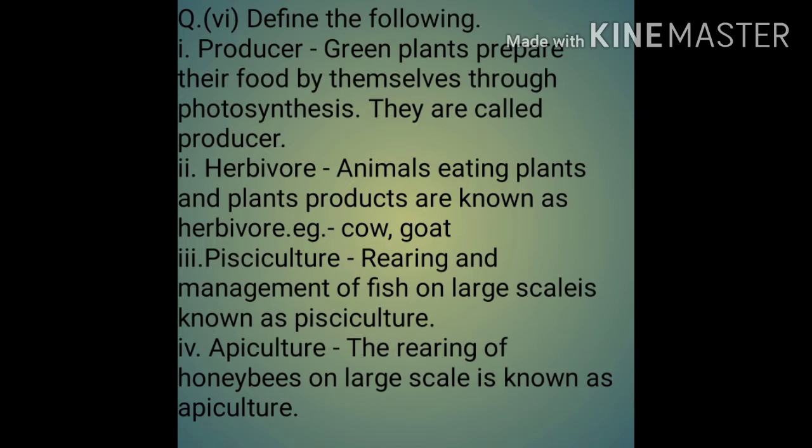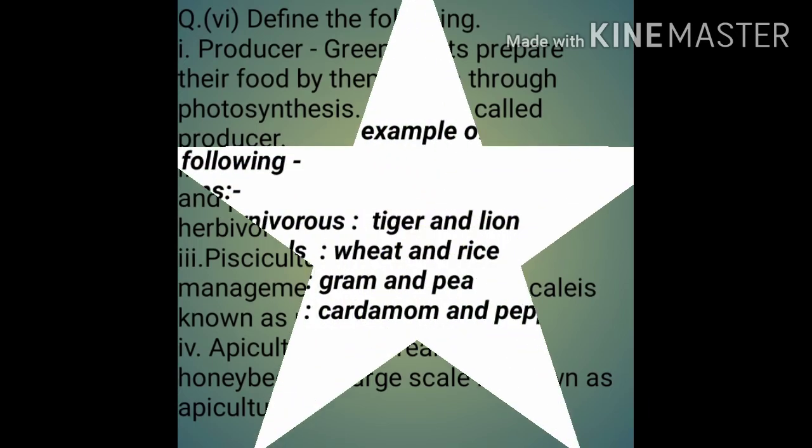2nd — Herbivore: Animals eating plants and plant products are known as herbivores. Example: Cow, goat. 3rd — Pisciculture: Rearing and management of fish on a large scale is called pisciculture. 4th — Apiculture: Rearing of honey bees on a large scale is called apiculture.